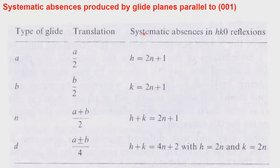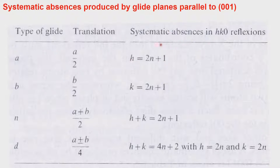Let us take all possible A glides. The type of glide is an A glide, the translation is a/2. Whenever A is involved it is h = 2n+1 which is systematically absent. For the B glide, the translation is b/2 and k = 2n+1 is absent. We cannot have a C glide parallel to 001 because the translation has to be half along that particular direction — there is no C glide associated with glide planes parallel to 001.